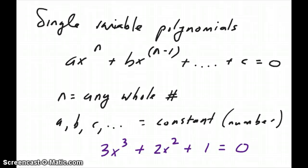First off, let me just introduce the topic of single variable polynomials. These are equations in math that have the following form, ax to the n plus bx to the n minus 1 and so on, and at the end you have c here which is representing a constant term, just a number, and the whole thing is equal to zero.